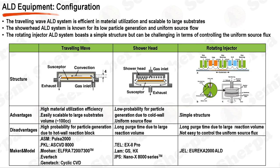Atomic layer deposition, ALD, equipment can come in a variety of configurations, each designed to cater to specific needs and applications. These configurations include the traveling wave, showerhead, and rotating injector systems. The traveling wave system is known for its high material utilization efficiency, making it an economical choice for many applications. Its design allows it to be easily scaled to accommodate large substrates. However, its relatively large reaction volume, around 100cc, and hot wall reaction block can lead to a higher probability of particle generation, which may affect the purity and quality of the deposited films.